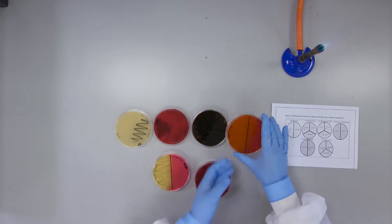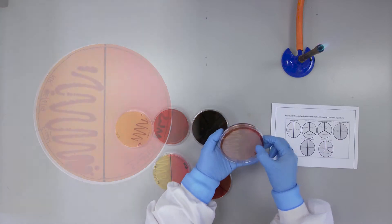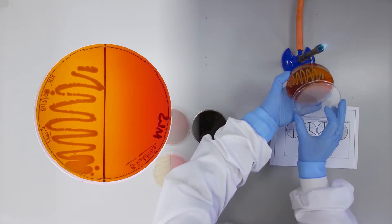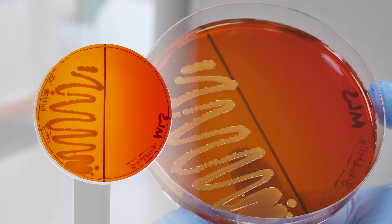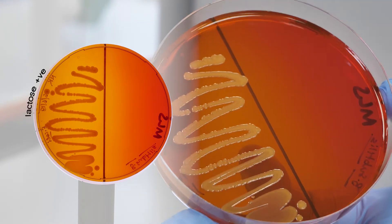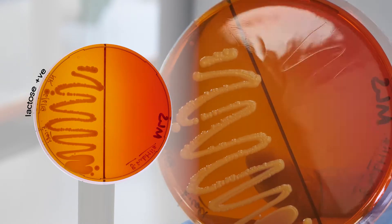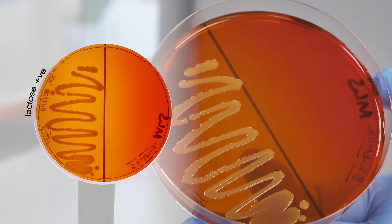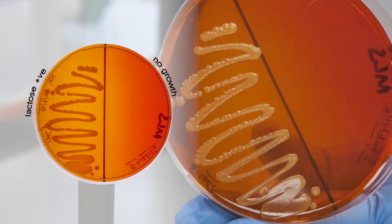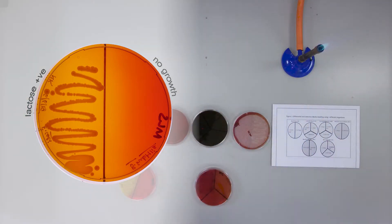Membrane laurel sulphate agar contains sodium laurel sulphate. Only bacteria that can tolerate this sodium laurel sulphate can grow. Lactose positive bacteria are indicated by a change of colour in the medium from red to yellow. Lactose negative bacteria do not produce this colour change and so remain red.